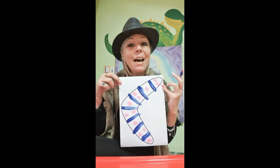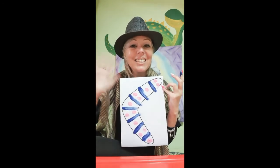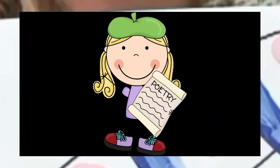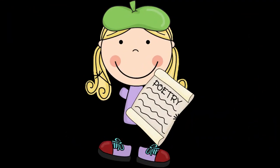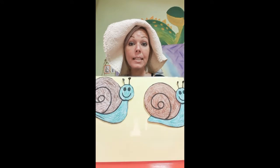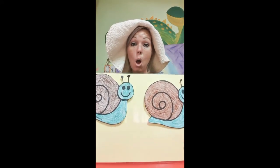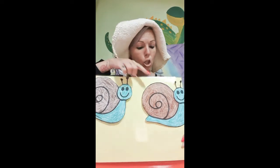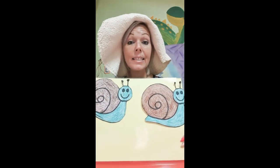Good morning boys and girls, this is Teacher Natalie from the Dolphin Class 2. For today, our poem is going to be about two snails, and I'm going to teach you how it goes. Here are our two snails, and the poem goes like this: one snail, two snails had a little talk.